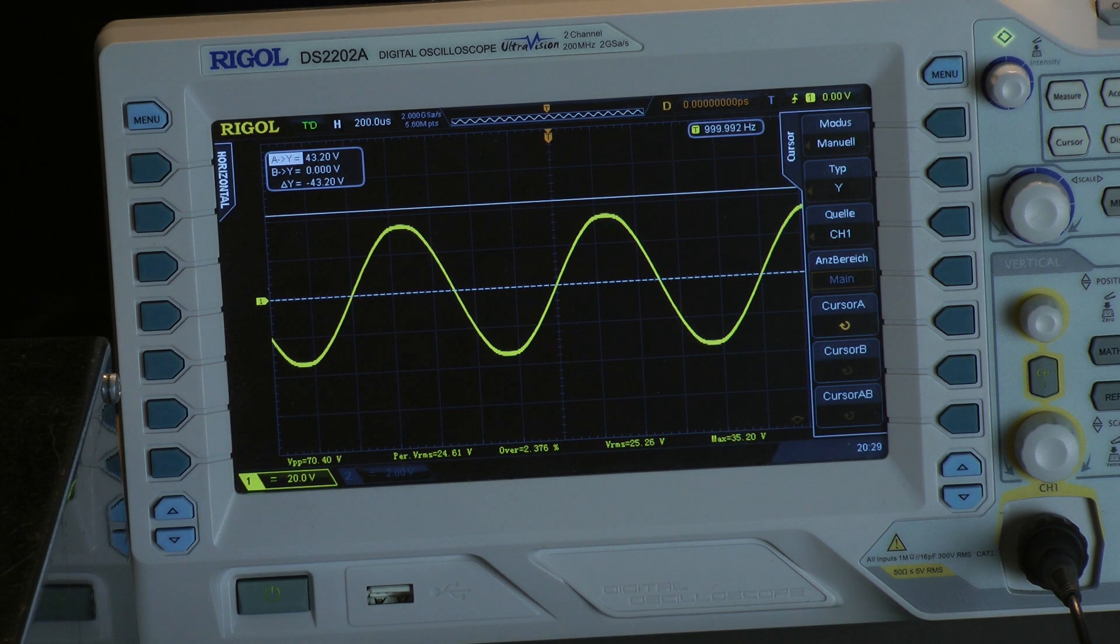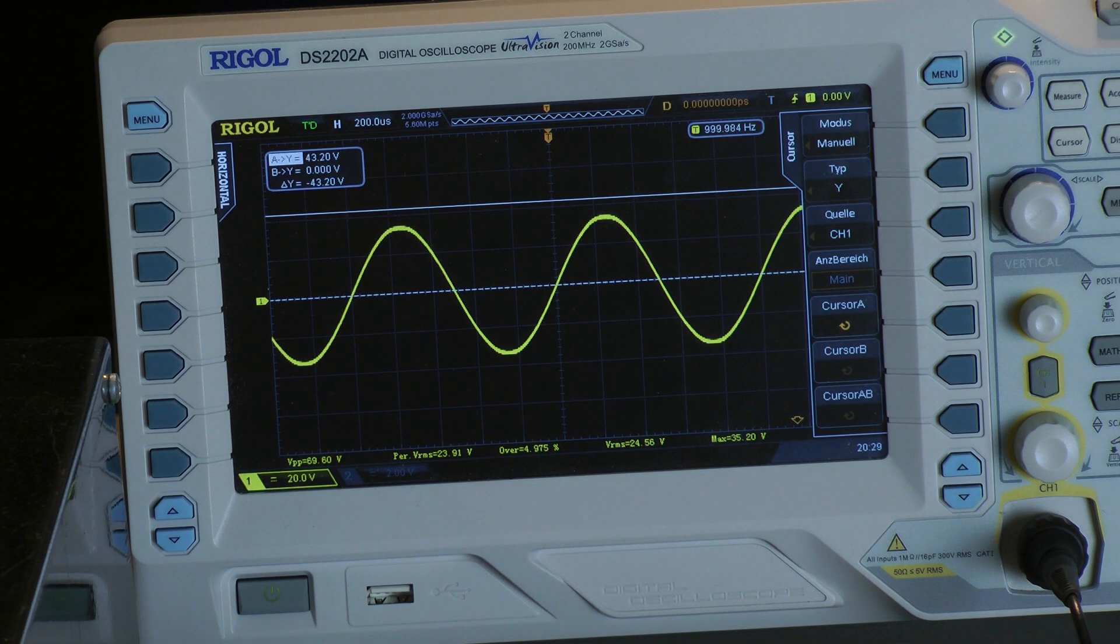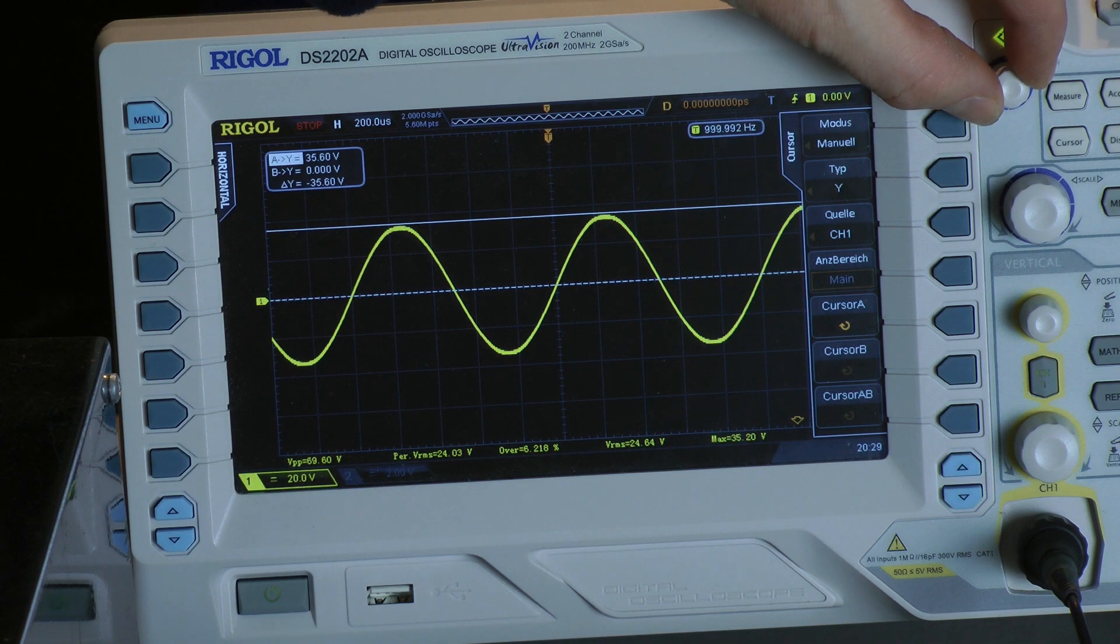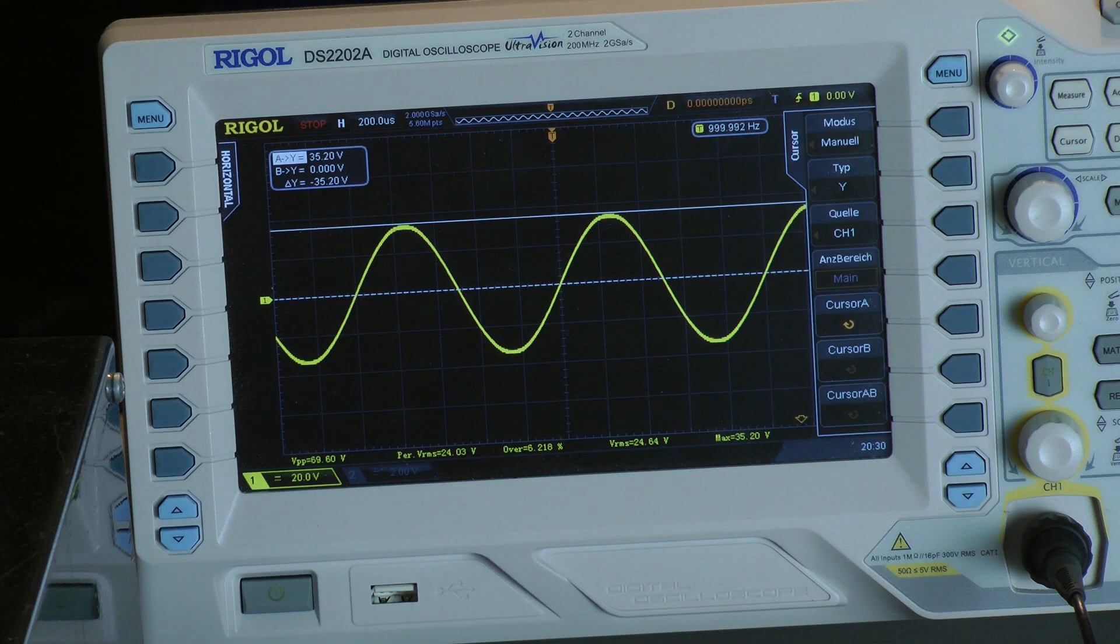Now testing 1 kilohertz into a 2 ohm load, both channels driven continuous power. I reduce the gain, it looks a little bit clipped. We have a maximum voltage of 35.2 volts.